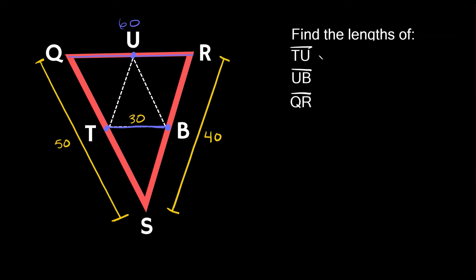That brings us to our first question: find the lengths of TU, UB, and QR. We just found QR — it's equal to 60. Now let's find TU. You always want to look at the line it's parallel to, which is equal to 40. So the mid-segment is half of the big one, which means TU is equal to 20.